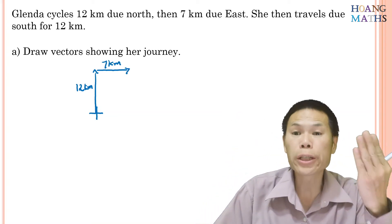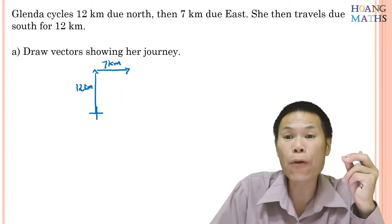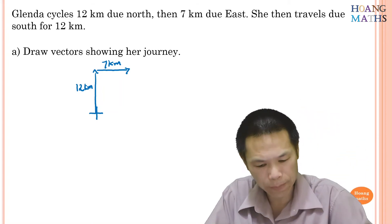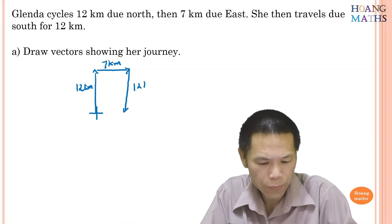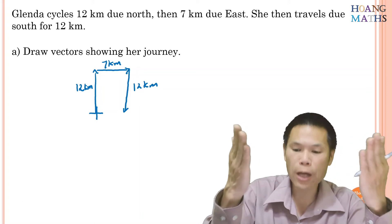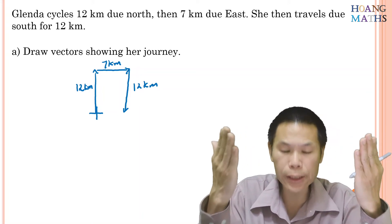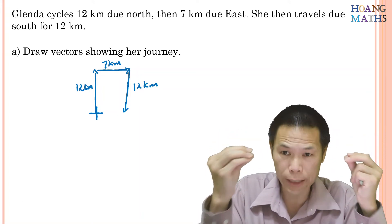There you go. She then travels south for another 12 kilometers, so she goes down south 12 kilometers. There you go, done. So this is the vector diagram.